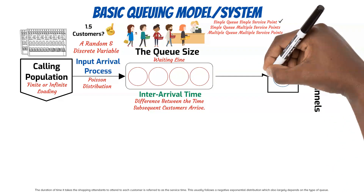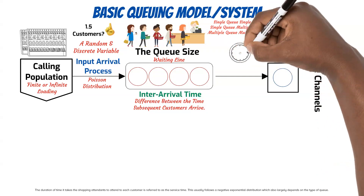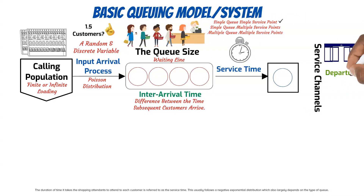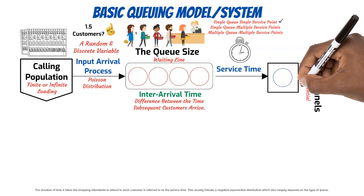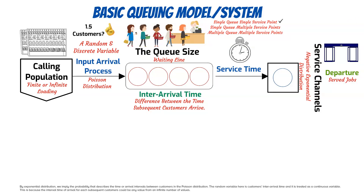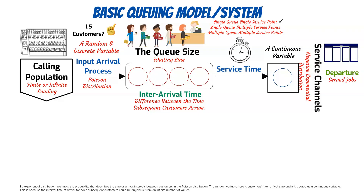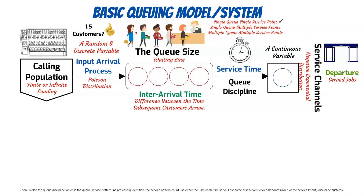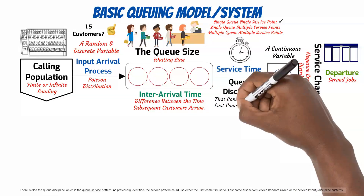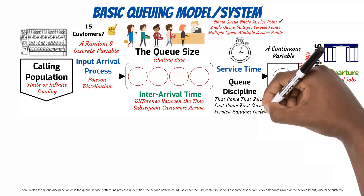The duration of time it takes the shopping attendants to attend to each customer is referred to as the service time. This usually follows a negative exponential distribution, which largely depends on the type of queue. The exponential distribution describes the probability of the time or inter-arrival intervals between customers in the Poisson distribution. The random variable here is customers' inter-arrival time, treated as a continuous variable, since the interval time of arrival for each subsequent customer could be any value from an infinite number of values. The queue discipline — the service pattern — could use first-come-first-serve, last-come-first-serve, service-random-order, or service-priority-discipline systems.